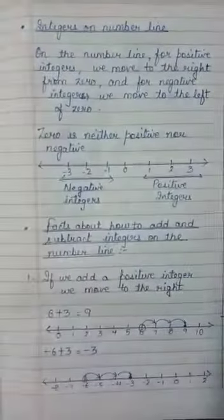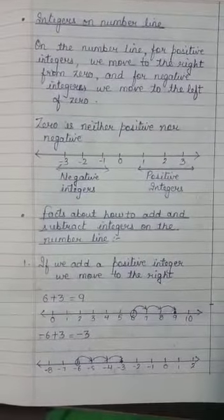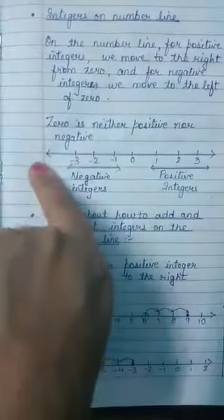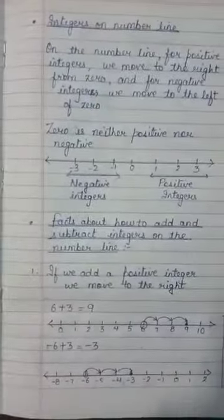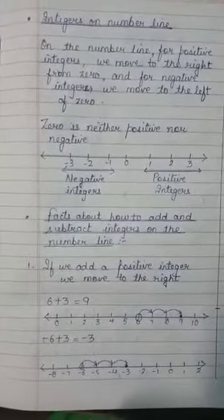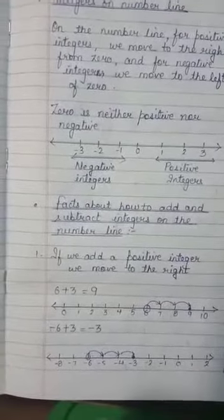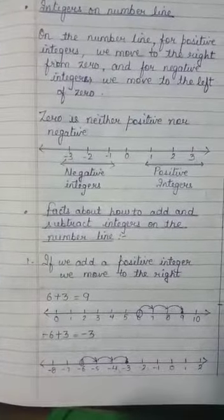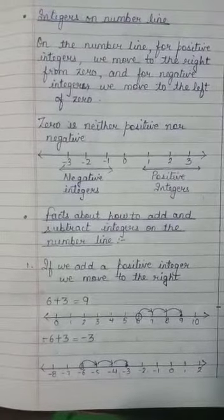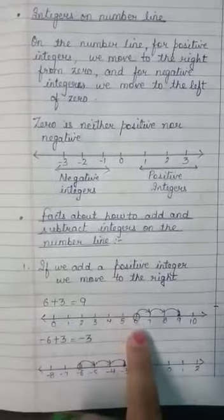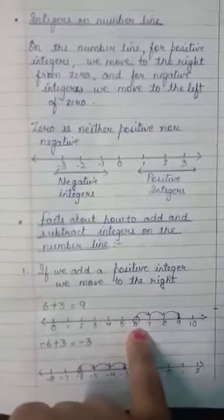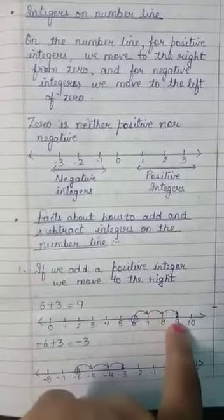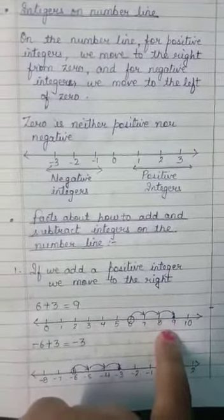Now we look at how to add and subtract integers on the number line. We can extend the number line in either direction. If we add a positive integer, we move to the right. For example, 6 plus 3: start at 6, take 3 jumps to the right — first jump lands on 7, second on 8, third on 9. So 6 plus 3 equals 9.